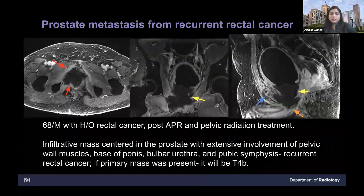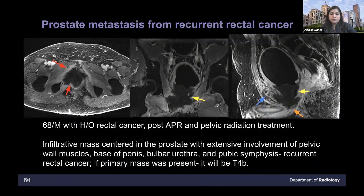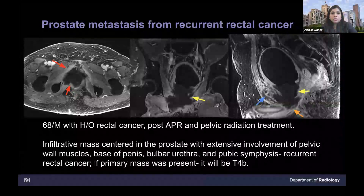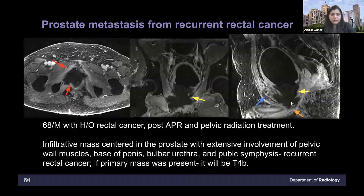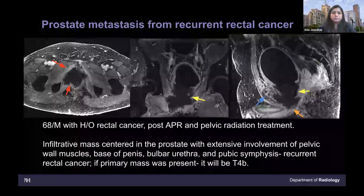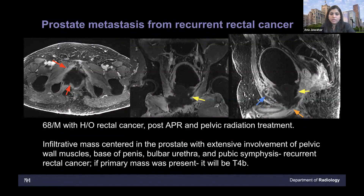Prostate metastases from recurrent rectal cancer — this patient had a rectal cancer and you can see the rectum has been resected with an anterior perineal resection; patient also had pelvic radiation, with all this fibrosis visible. The patient came back with pelvic pain. On post-contrast images of the pelvis, you can see infiltrative tumor involving the entire prostate, with blue arrows showing pubic symphysis involvement, bulbous spongiosum and penile shaft involvement, and muscle infiltration. This is recurrent rectal cancer with involvement of all these structures — not a primary prostate, but a recurrent rectal tumor.